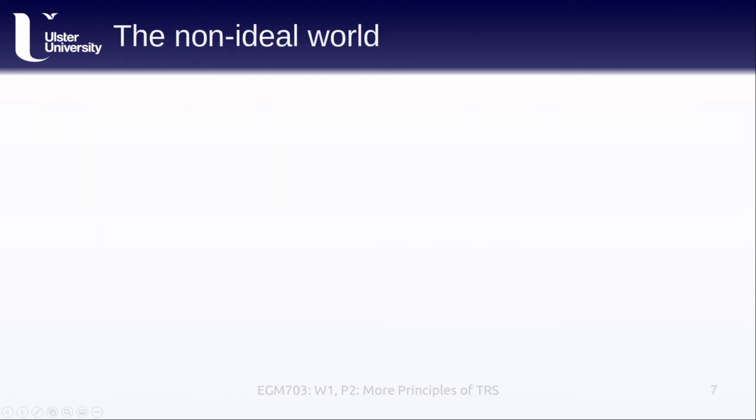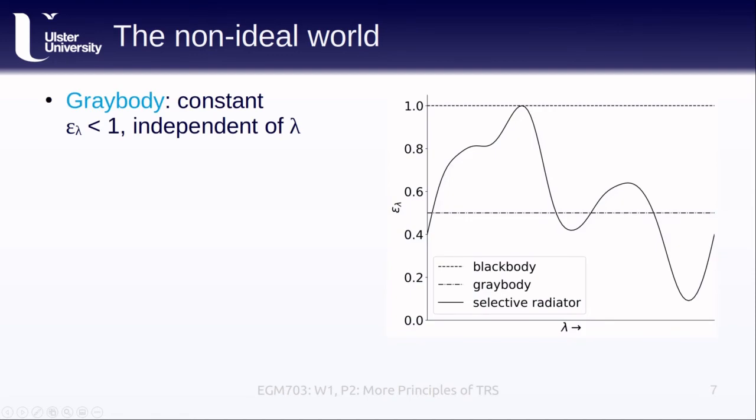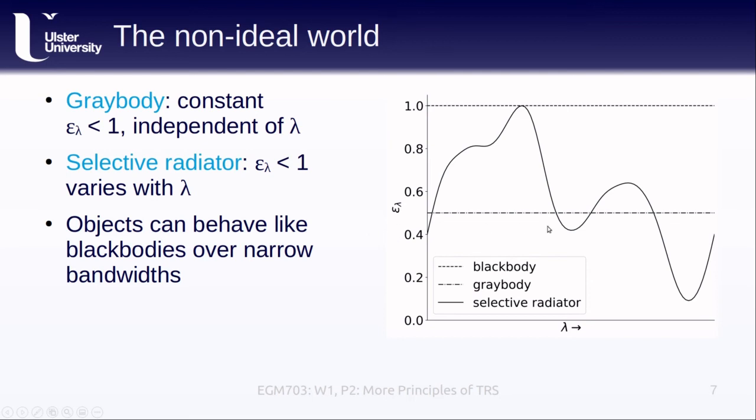So because we live in a non-ideal world, we have different ways of describing how objects differ from ideal blackbodies. The first one, a graybody, is an object that has an approximately constant emissivity, which is to say its emissivity does not depend on wavelength. In the figure here, this is shown by the dash dot line at about 0.5. Next, a selective radiator, shown in the figure as this solid black line, is an object whose emissivity does vary, sometimes significantly, with wavelength. Oftentimes, objects or surfaces can behave like blackbodies over very narrow bandwidths or wavelength ranges. As an example, clear water has a very high emissivity in thermal infrared, meaning that its emissivity in this wavelength region is very nearly equal to 1.